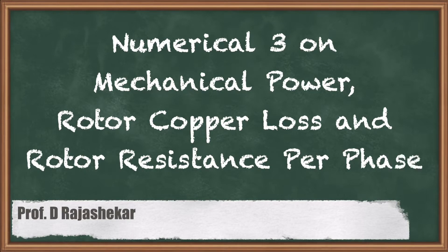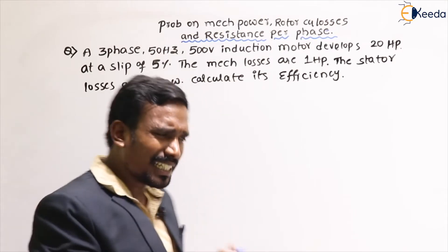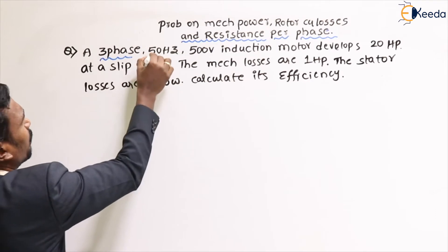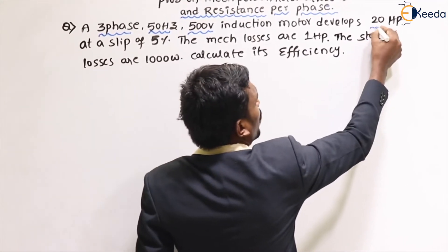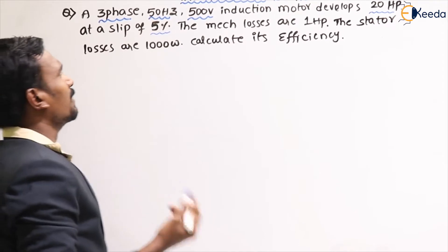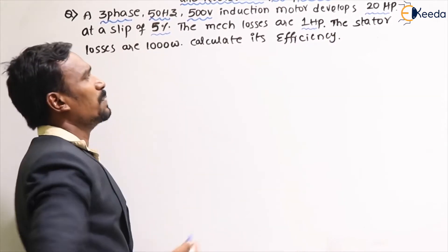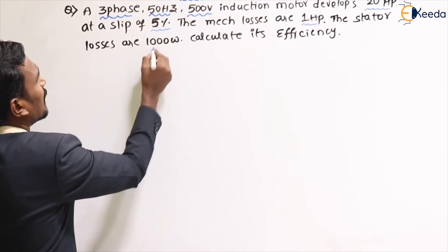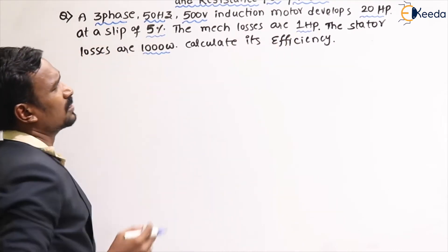Hi, dear students. In this video we are going to discuss a problem on mechanical power, rotor copper losses, and resistance per phase. The problem: a three-phase, 50 Hz, 500-volt induction motor develops 20 hp at a slip of five percent. The mechanical losses are one hp and the stator losses are one thousand watts. We need to calculate the efficiency.